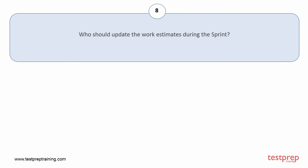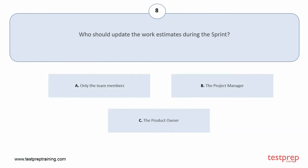Question number 8: Who should update the work estimates during the sprint? Your options are: A, only the team members; B, the project manager; C, the product owner. The correct answer is option A.